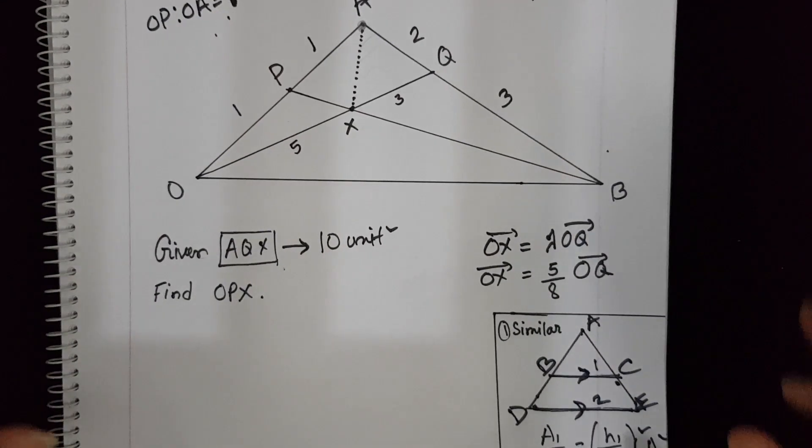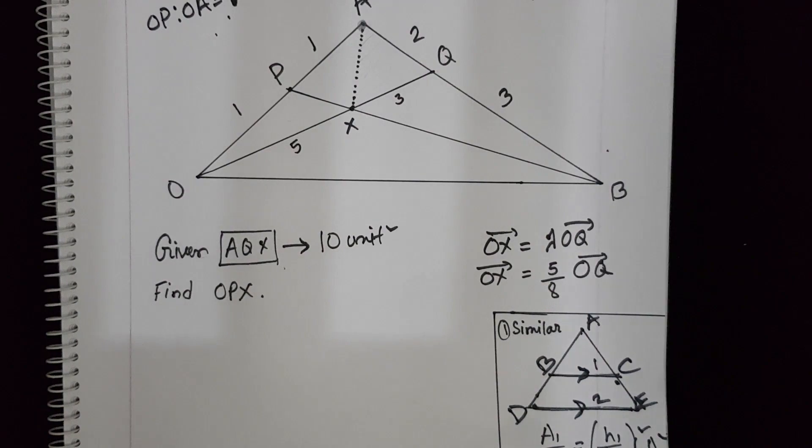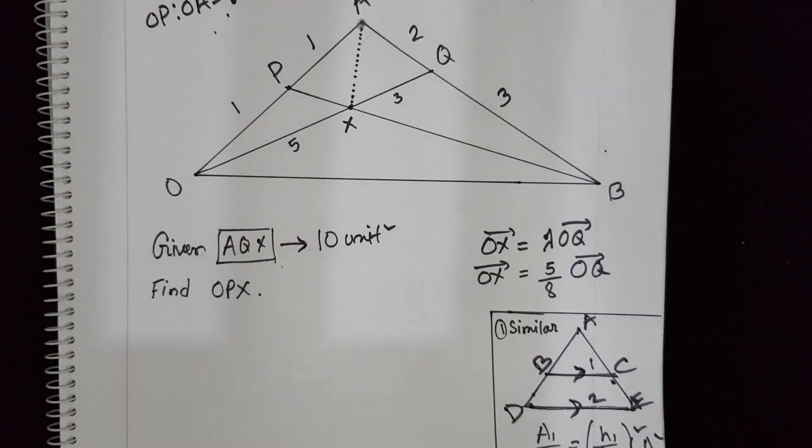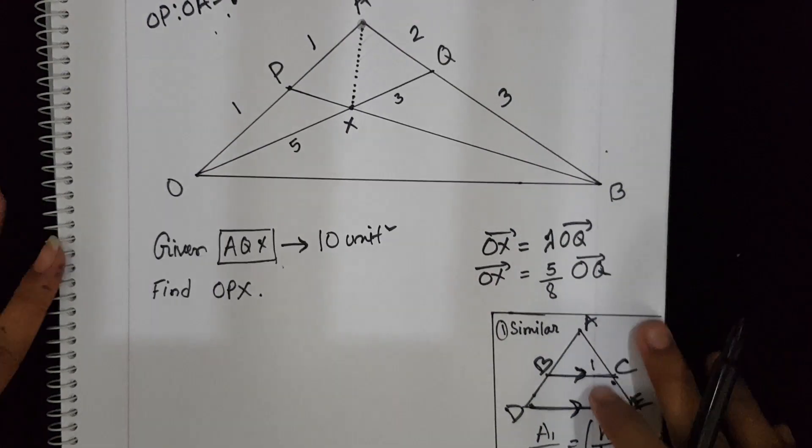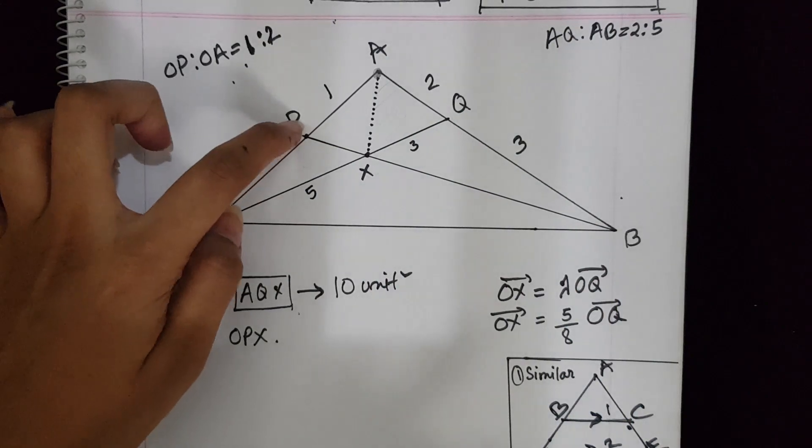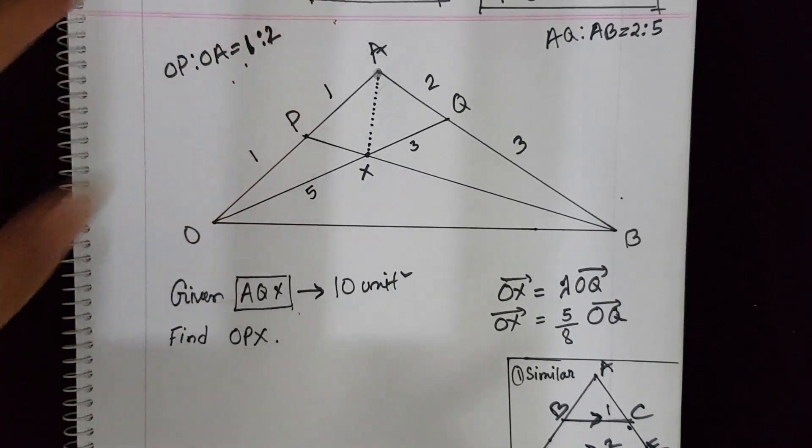So suppose this is a Maths B Vector problem from Jan 18. We have triangle AOB and we have these ratios from the question. Suppose P is the midpoint, so OP to PA is 1 to 1.